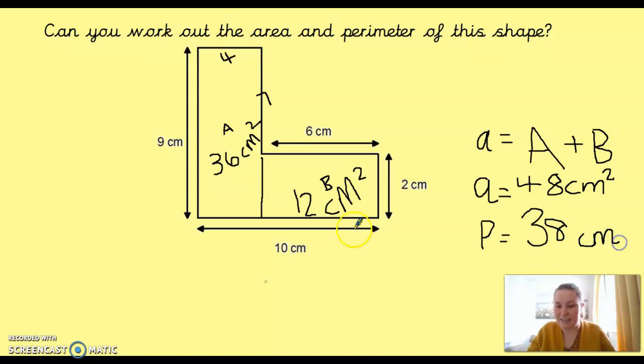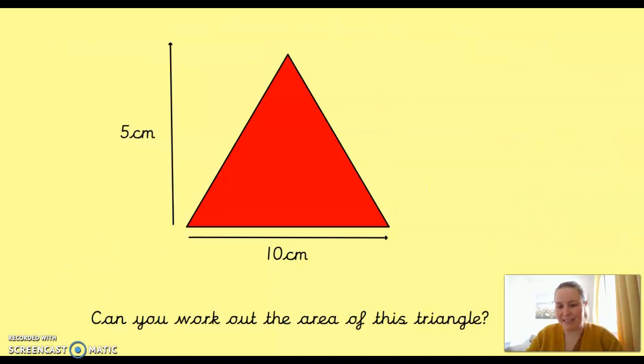So, you should have got perimeter of 38 centimetres. So, well done if you've got that one right. Let's continue to look at the triangles and the parallelograms now, so it gets a bit more complicated.